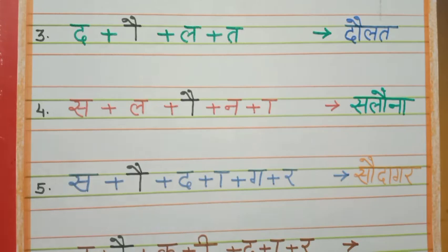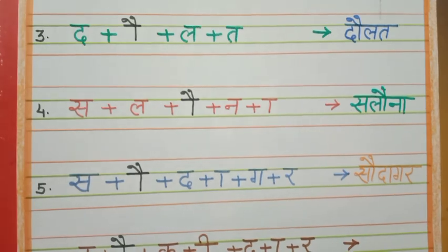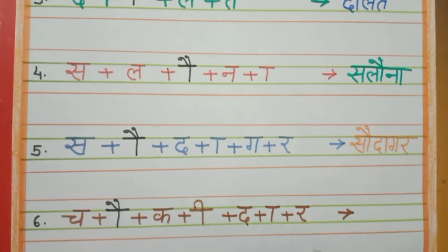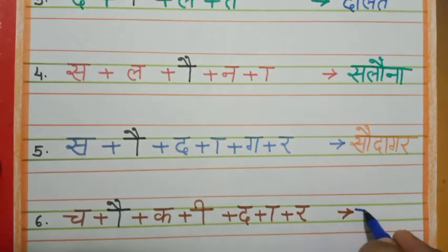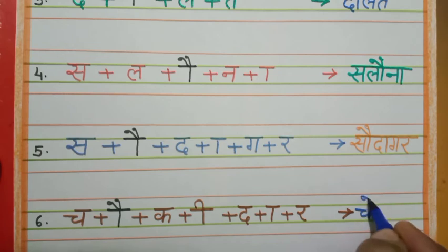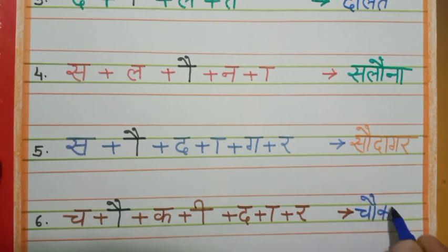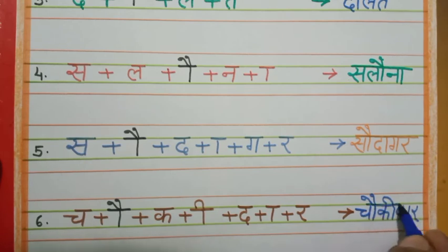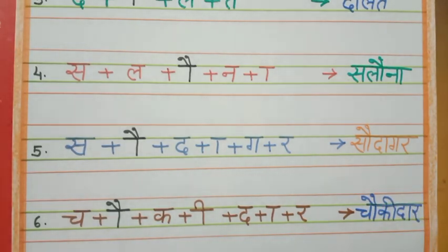Then, last — aapka: cha, auki matra, ka, e ki matra, da, auki matra, rr. Yung jayega aapka: cha, auki matra, ka, e ki matra, da, a ki matra, rr. Cha, ki, da, rr. Ok?